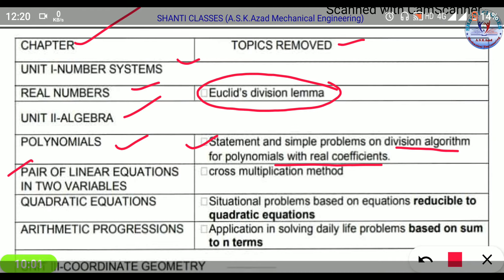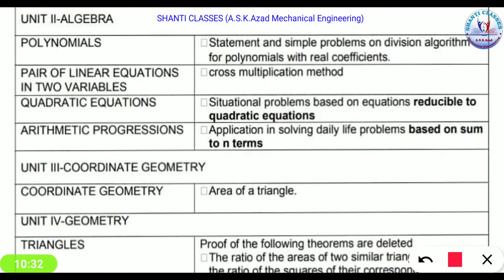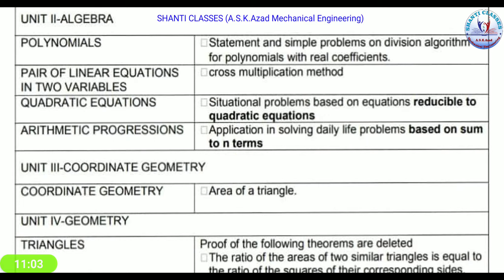Moving further in Math, problems based on equations reducible to quadratic equations and problems based on equations in solving daily life problems based on the sum of n terms have been removed. In Coordinate Geometry, the area of a triangle topic has been deleted. Theorems on similar triangles have also been affected — specifically, the theorem that the ratio of the area of two similar triangles is equal to the ratio of the square of their corresponding sides has been deleted.